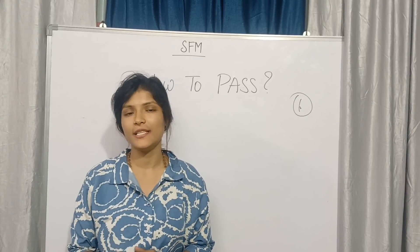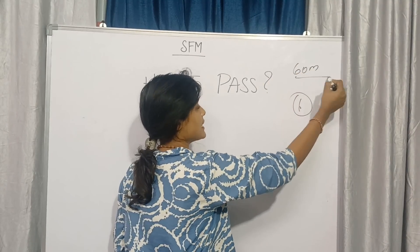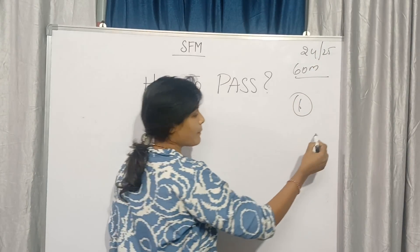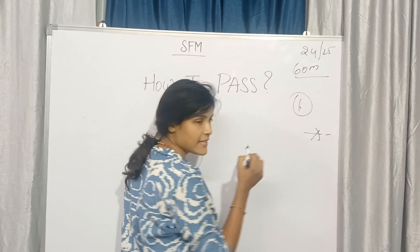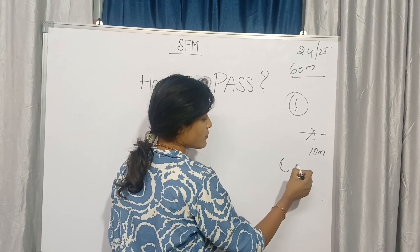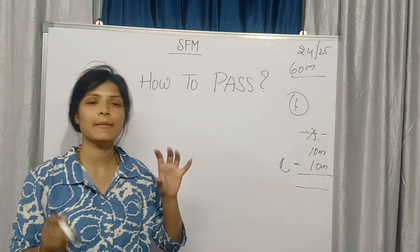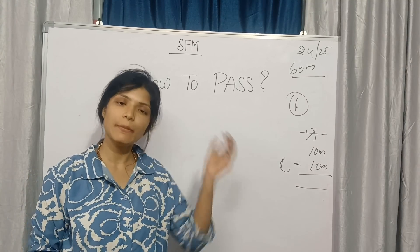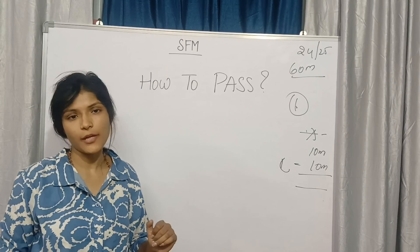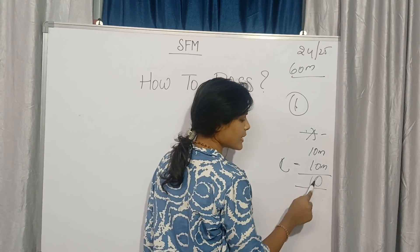Your paper is 60 marks and passing is around 24 or 25 marks. In Part A you will get theory only, which is 10 marks weightage. In Part C you will have a case study, which is 10 marks weightage. These two sections — Part A and Part C — without any preparation you can attempt them. Out of 20 marks you are attempting 20 marks.